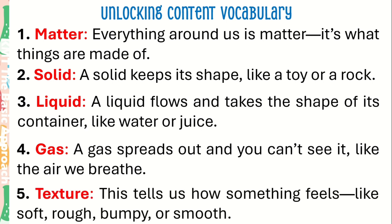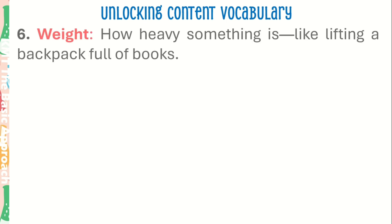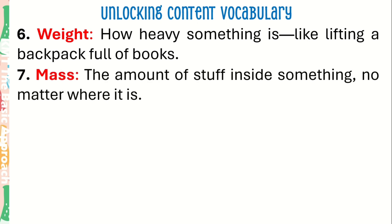Number 5: Texture. This tells us how something feels, like soft, rough, bumpy, or smooth. Number 6: Weight. How heavy something is, like lifting a backpack full of books. Number 7: Mass. The amount of stuff inside something, no matter where it is.